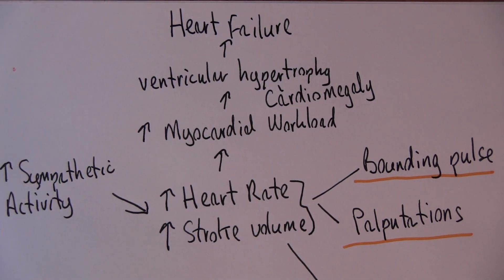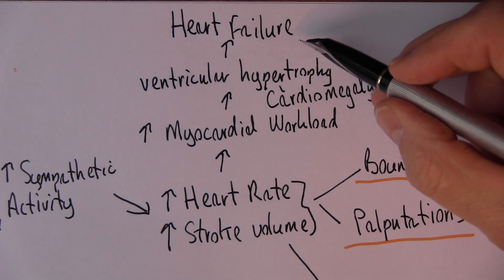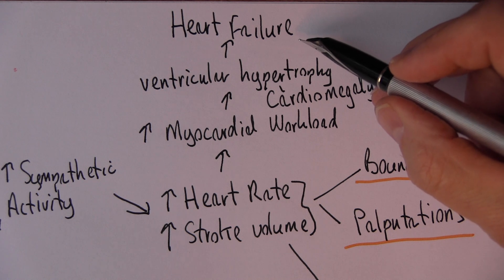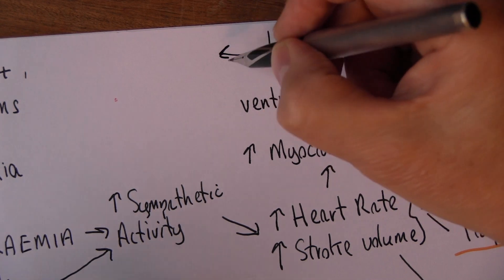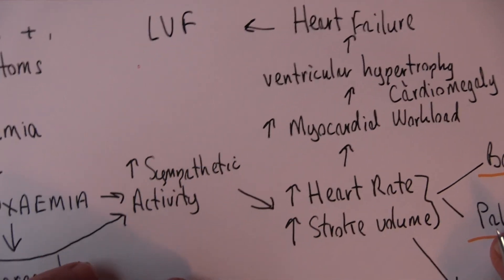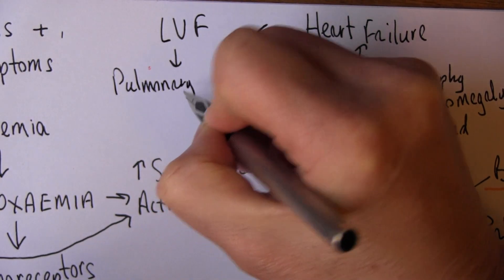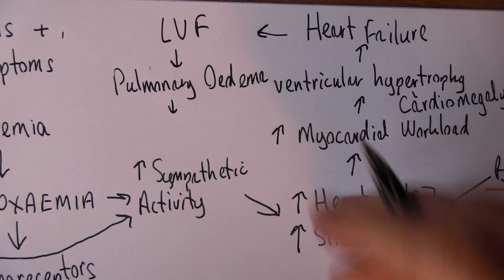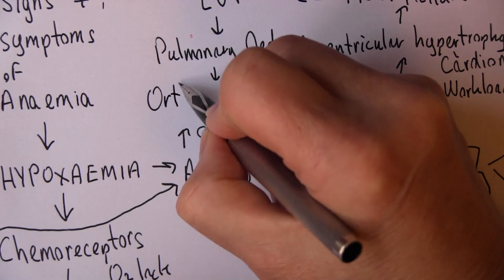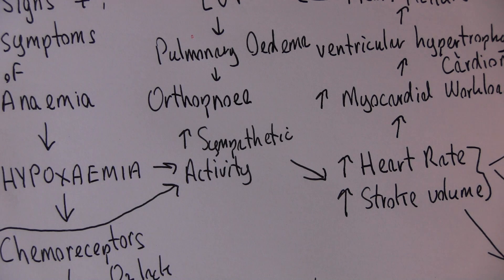A long-term complication of anemia is heart failure — and of course heart failure is also a cause of anemia, so we get into a vicious downward spiral. In heart failure there can be left ventricular failure, which leads to pulmonary oedema — soggy lungs — and the clinical feature we might notice first is orthopnea: shortness of breath when the patient is lying down, relieved somewhat when sitting up.